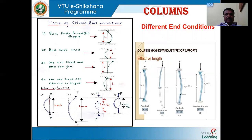The different types of end conditions are: first, both ends pinned or hinged. The effective length is the length for which the entire column buckles. You can see in the diagram where both ends are pinned or hinged, and the effective length is taken for the part which has buckled under the application of load.